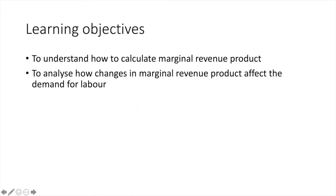By this point, you should have a better understanding of how to calculate marginal revenue product and its implications for the quantity of labour employed by a firm. Additionally, you should be able to analyse changes in MRP and understand how they affect the demand for labour. If you have any questions or comments, leave them below and let's try to work through them together. That's us done for now and I'll see you in the next one.